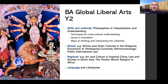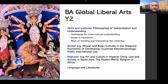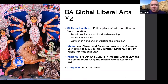In year two, we again have the skills and method track, the global track, the regional track, and the language and literatures track. In skills and method, we have Philosophies of Interpretation and Understanding — basically a philosophy module to help you think abstractly. In the global track, we have options like African and Asian Cultures in the Diaspora, Economics of Developing Countries, Ethnomusicology, and Public International Law — a whole range from throughout the university. In the regional track, for example, Art and Culture in Imperial China. You can also continue with language and literatures.